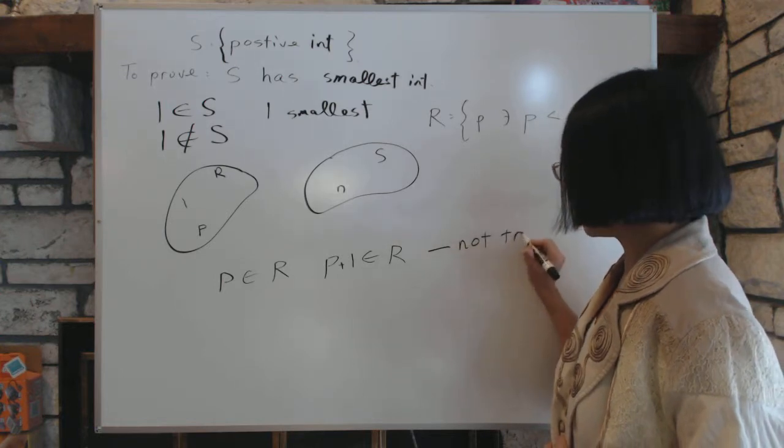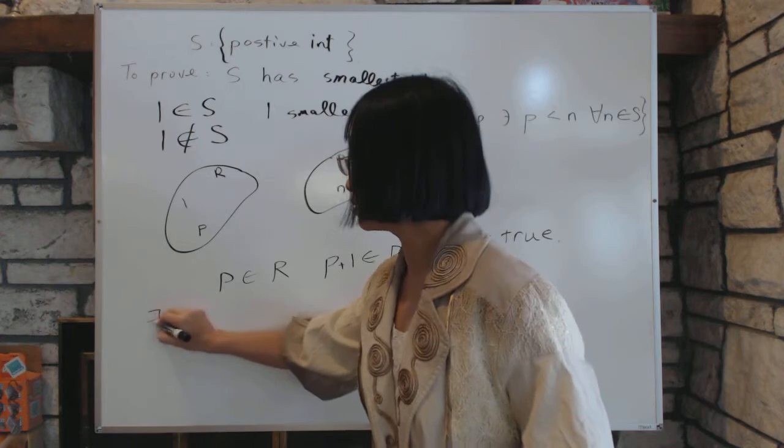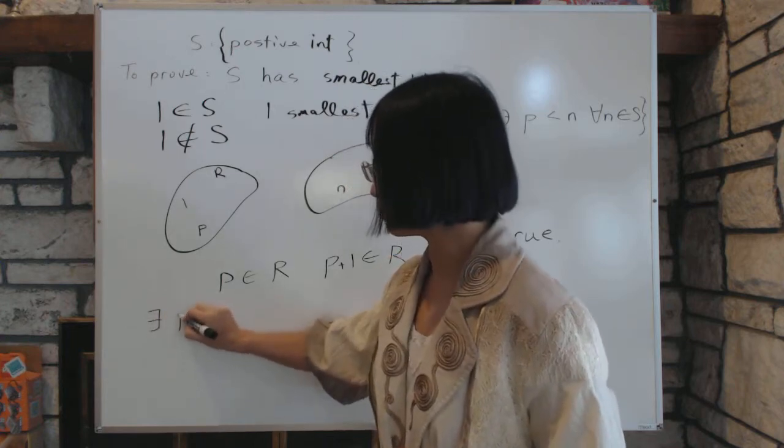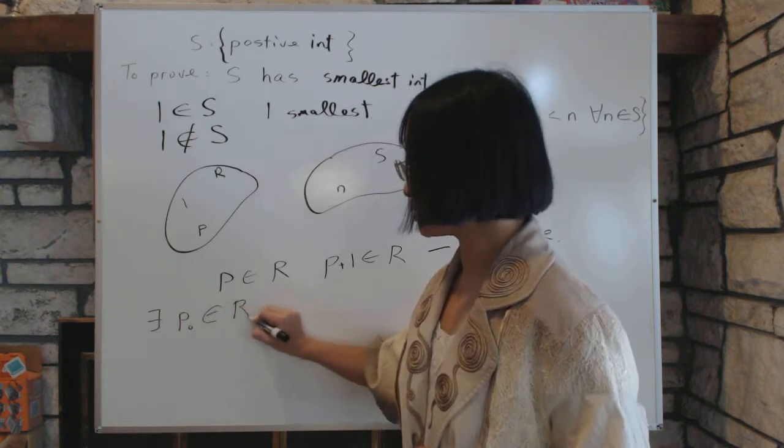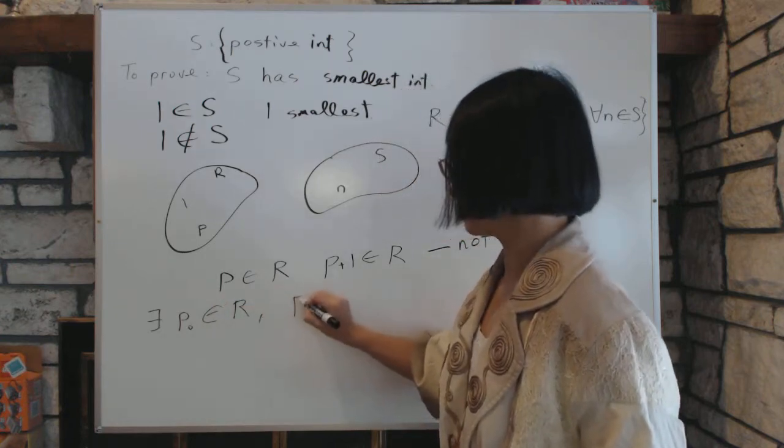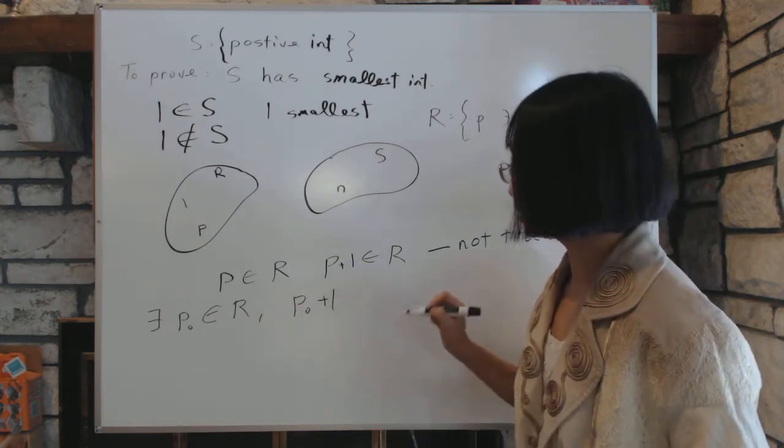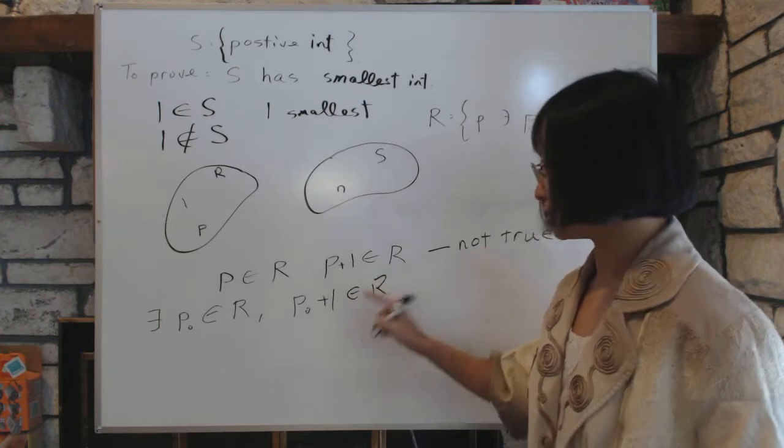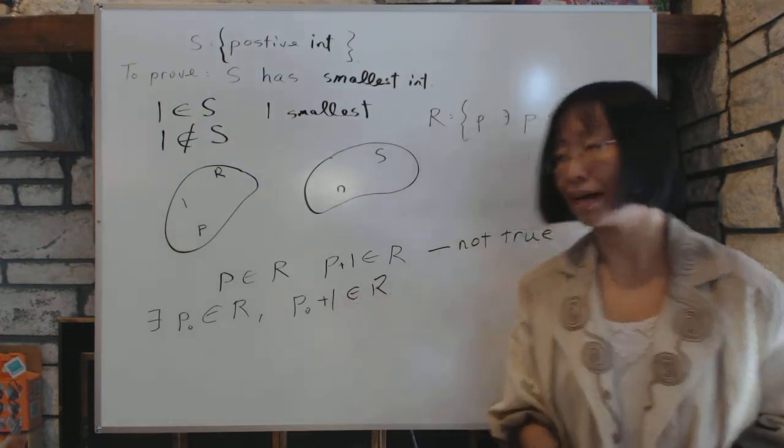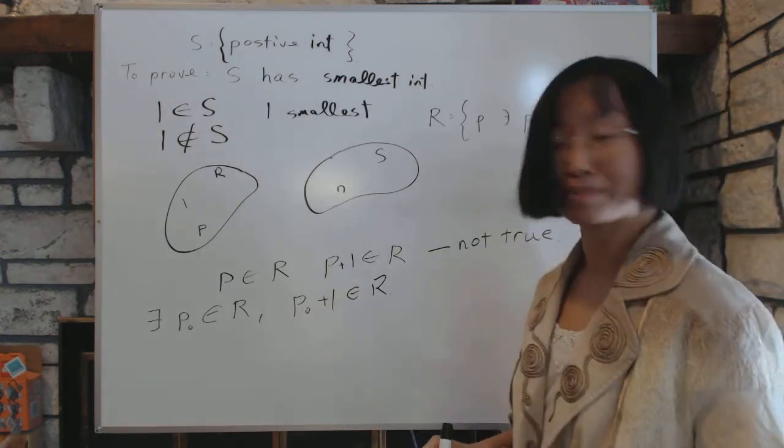So then what you end up with is there exists p, so there exists a value, we call it p zero, such that p zero is in R, but p zero plus one is not. Now this is a very powerful argument that will solve our problem for us. This is the critical point.